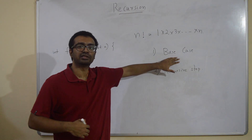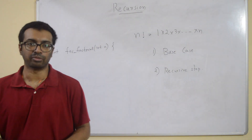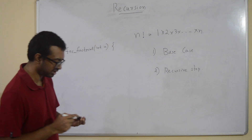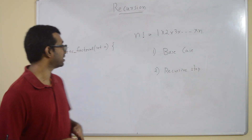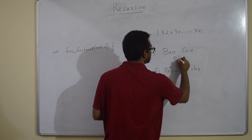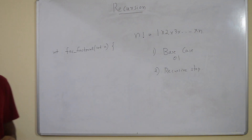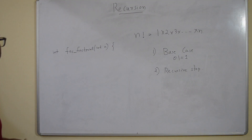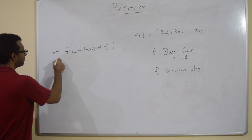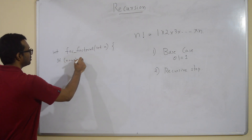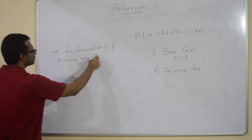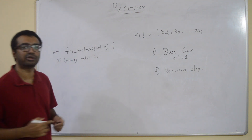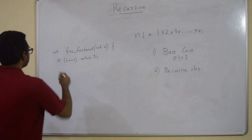The function body has two parts: the base case and the recursive step. What is the base case for factorial? The simplest case is 0 factorial, which equals 1. So I write: if n == 0, return 1. When the input is the base case, we return 1 because 0 factorial is 1.